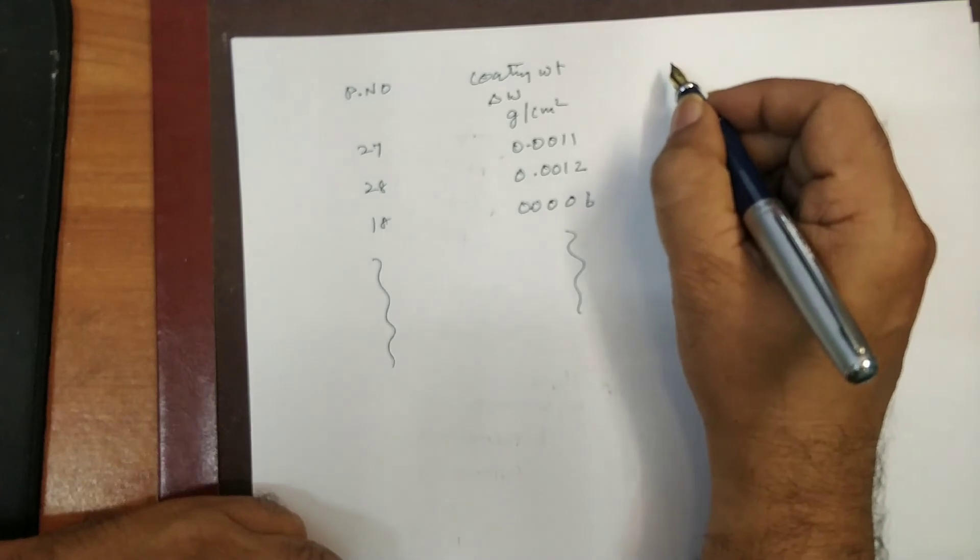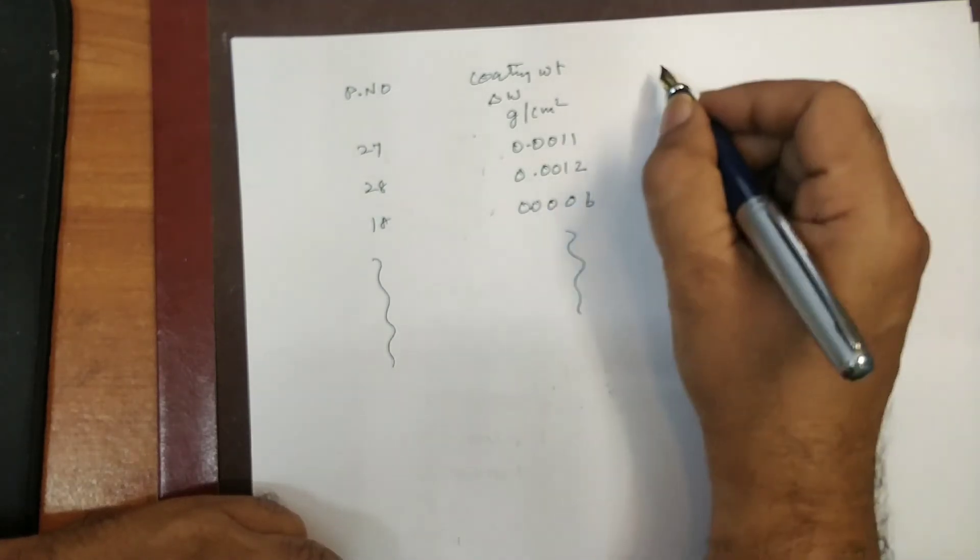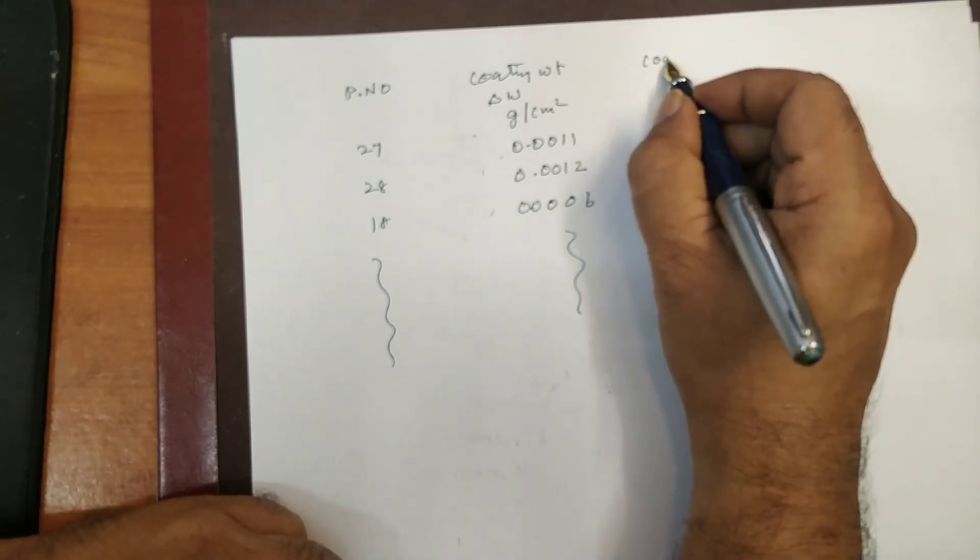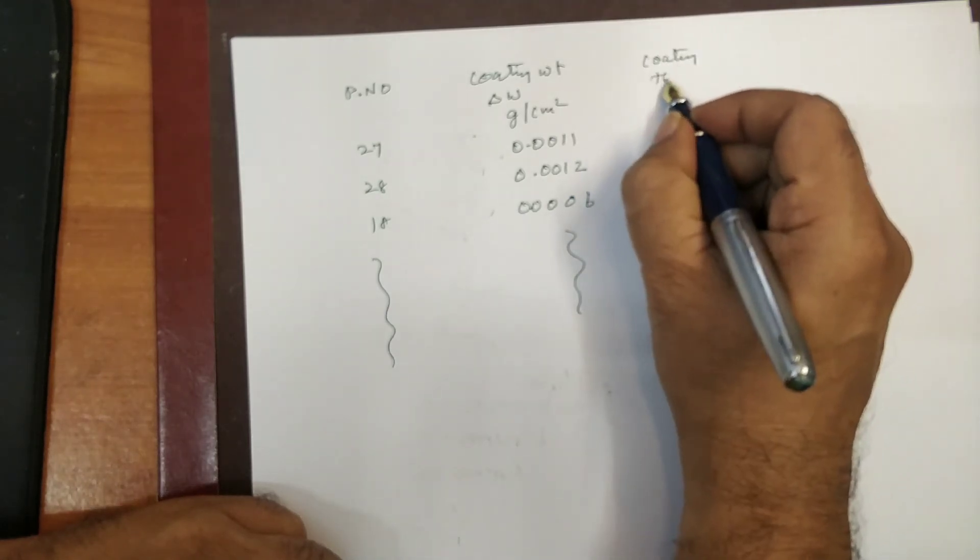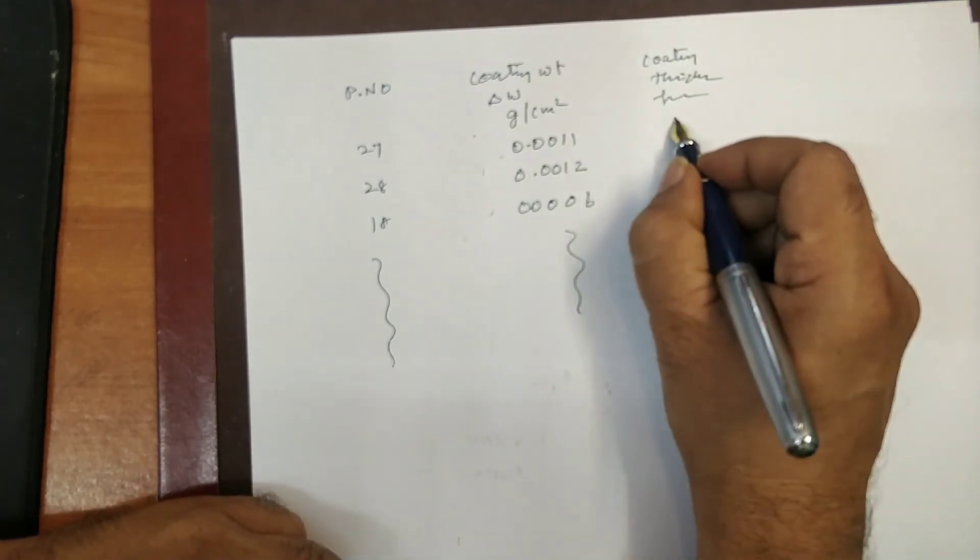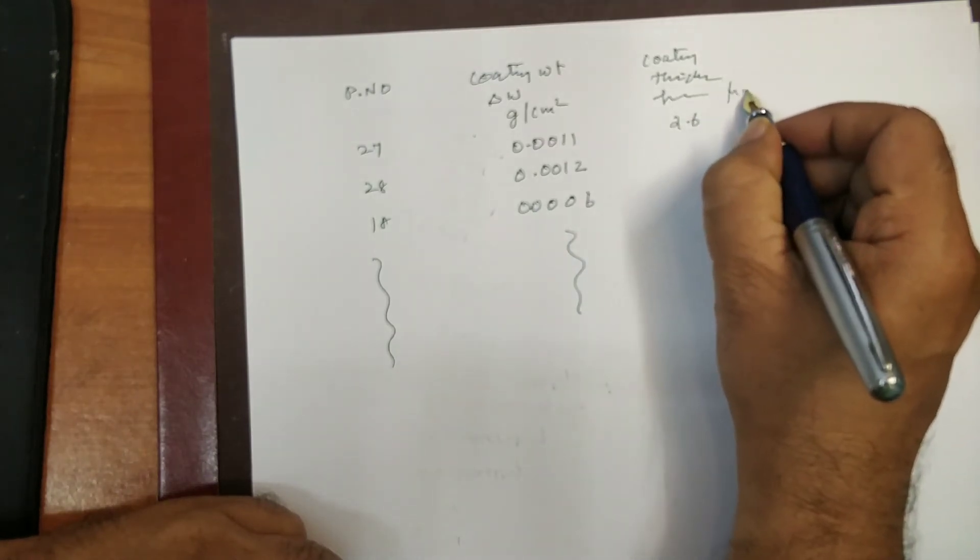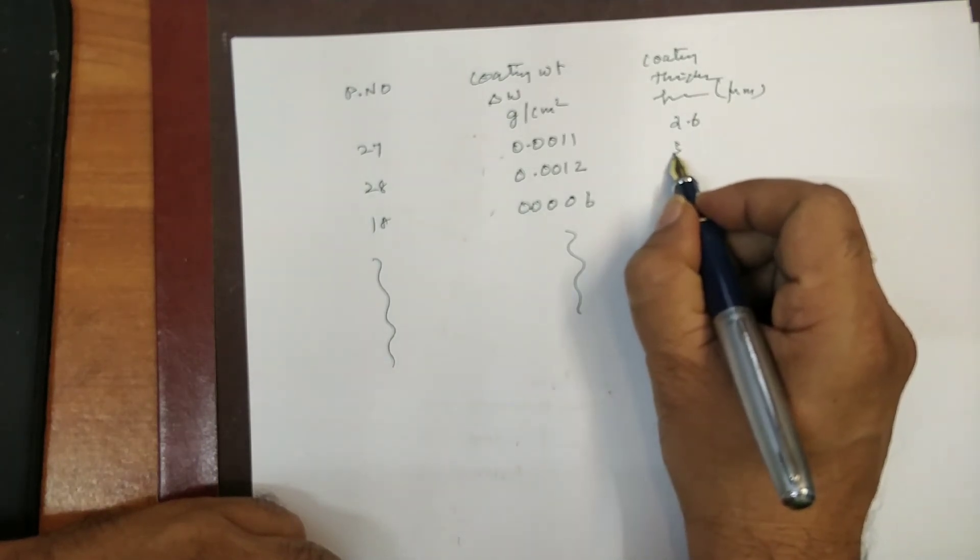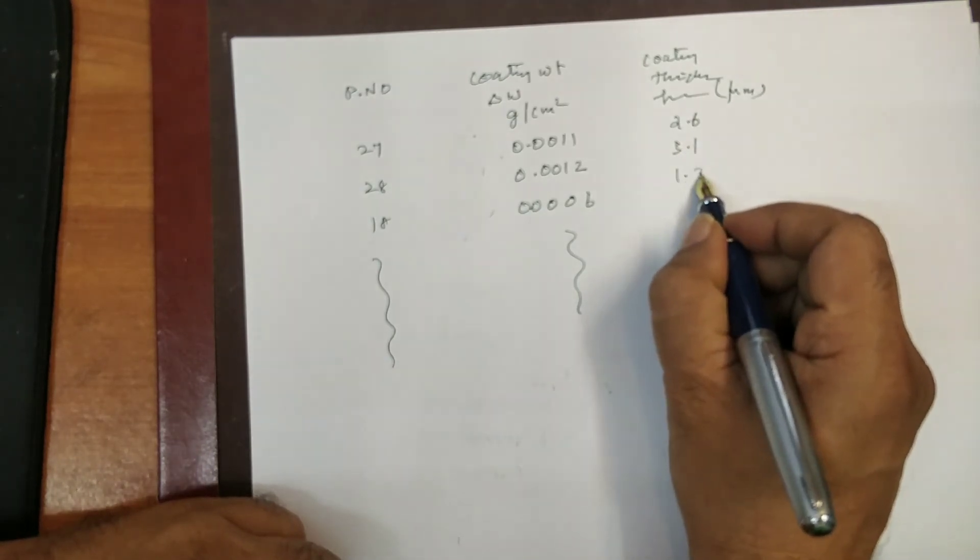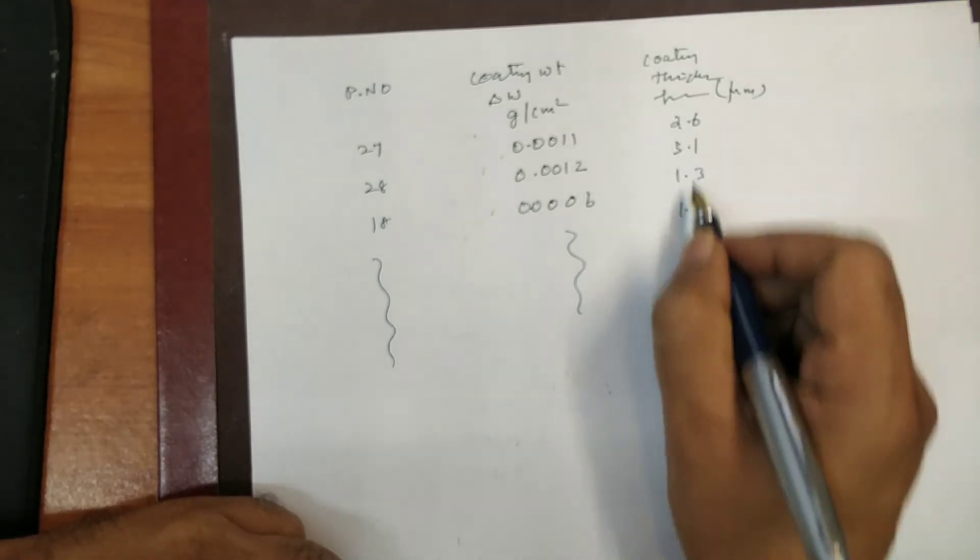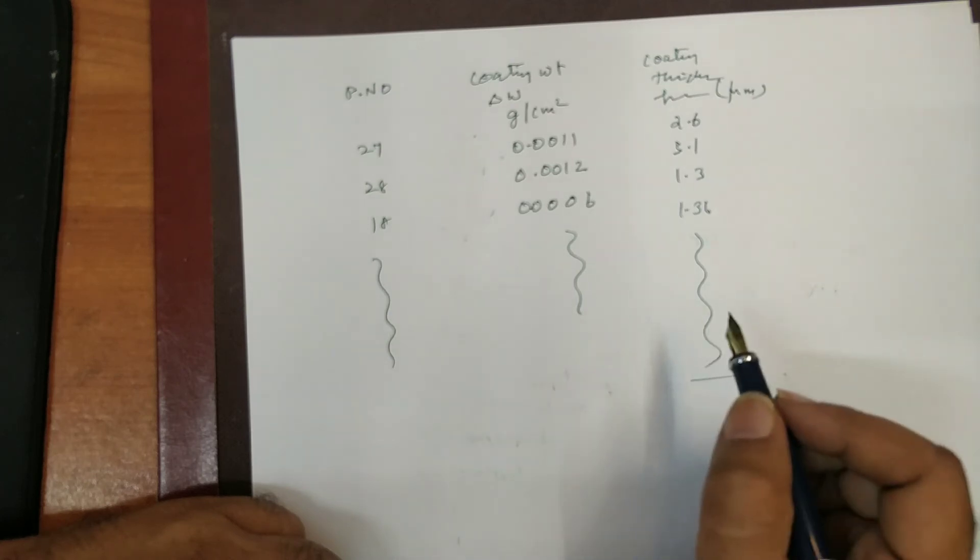So, and I have got the coating thickness from the density. So, from this we can easily calculate. So, coating thickness. So, I have calculated around 2.6. All are given in micrometer. It is converted dually. So, 2.6 micrometer. 3 micrometer. 3.1 micrometer. 1.3 micrometer. 1.36 micrometer. Etc. So, then I have taken the average like this.